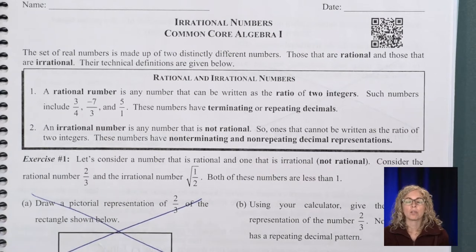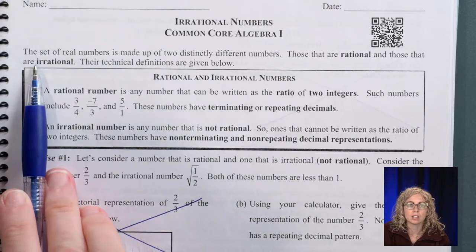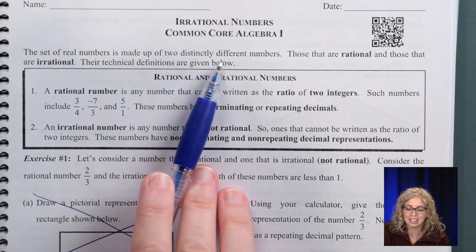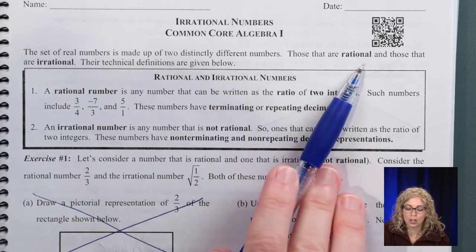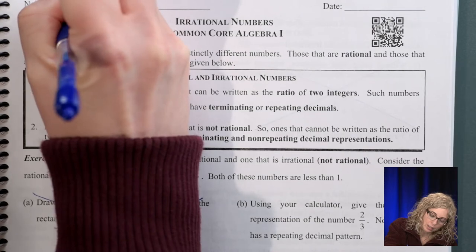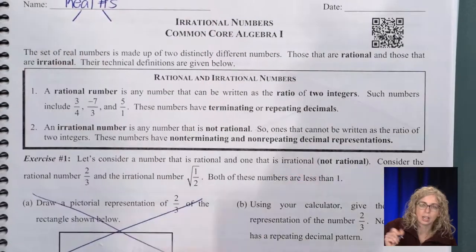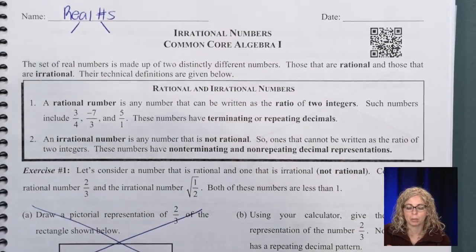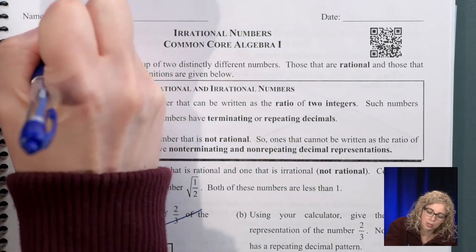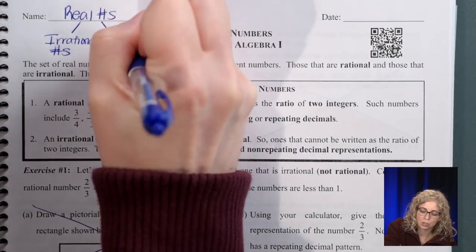Today we're going to cover both Lesson 2 and Lesson 3. I'm going to try to move quicker than I did in Lesson 1 so the video isn't too long. Starting at the top of the page, it says the set of real numbers is made up of two distinctly different numbers — those that are rational and those that are irrational. You can think of a tree diagram: subsets of the real numbers are irrational numbers and rational numbers.